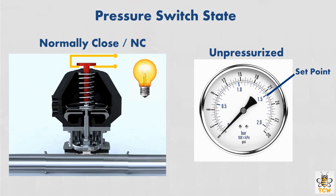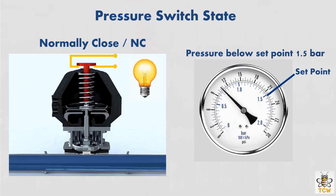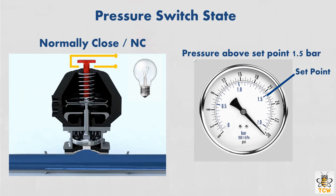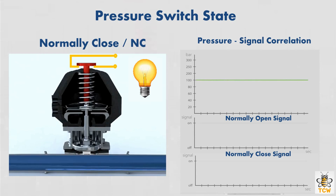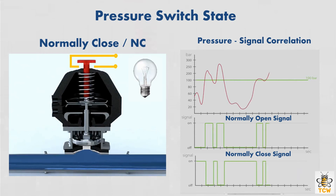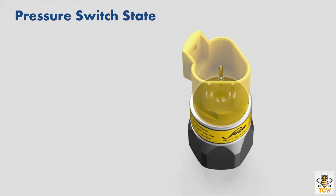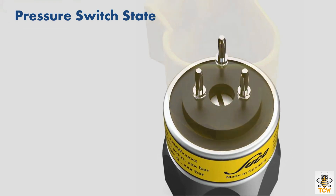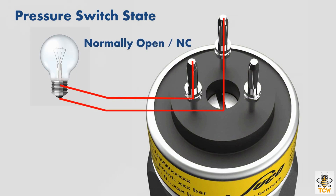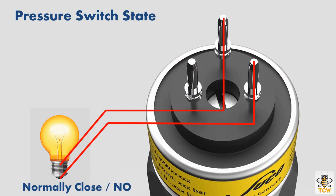The second state is normally closed, or NC. Normally closed is the state where the pressure switch is connected when unpressurized. It remains connected if given a pressure lower than the set point pressure, and will disconnect only when the pressure reaches or exceeds the set point. The normally closed and normally open signal outputs are opposite to each other. Setting the state of the pressure switch is done by connecting certain terminals. Generally, pressure switches have three terminals that can form two pairs of wires — one pair for the normally open signal output, and the other pair for the normally closed signal output.